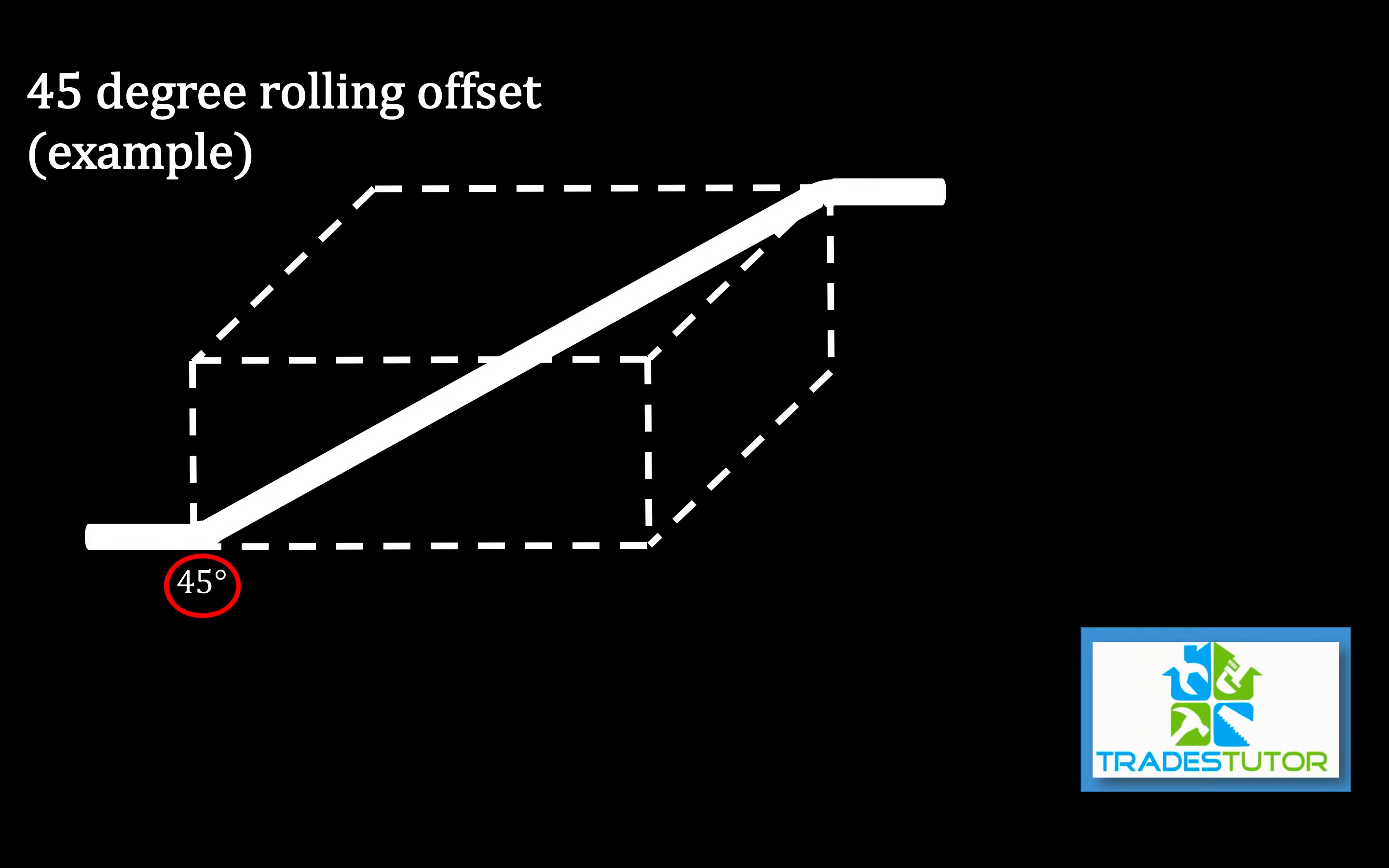Remembering that this is a 45 degree rolling offset. So that's a 45 degree, that's a 45 degree, and we're going to throw down a 90 there and a 90 right there. So what we have is the offset from one side of the room to the other. And then we're going to do the rise from the floor to the ceiling of the room. And those come in very important in this calculation.